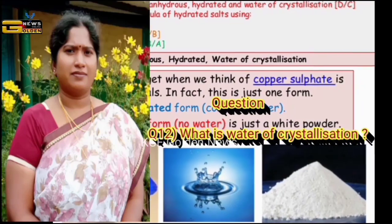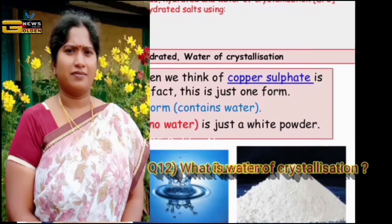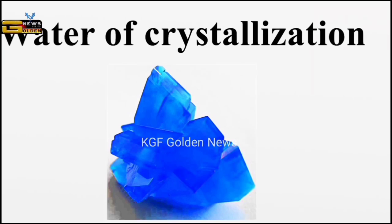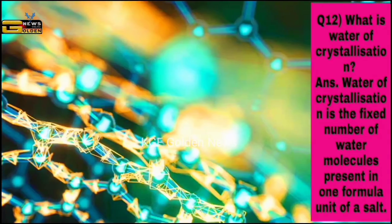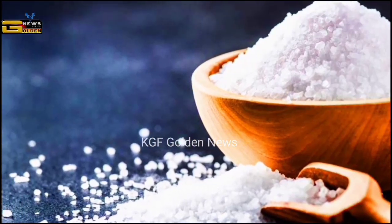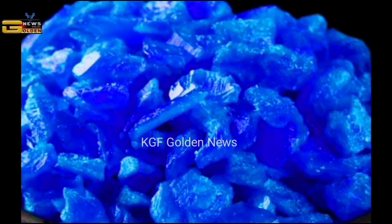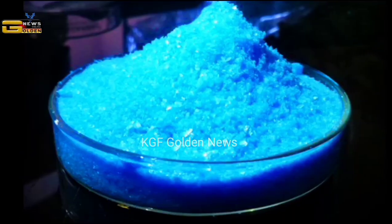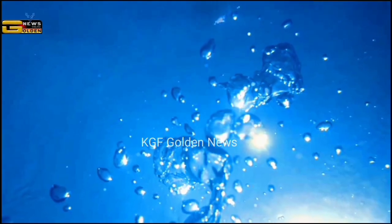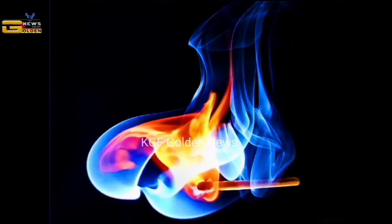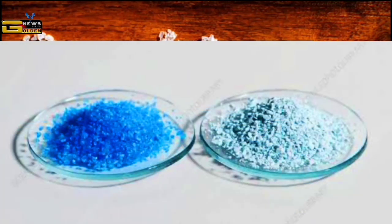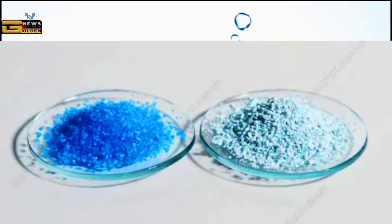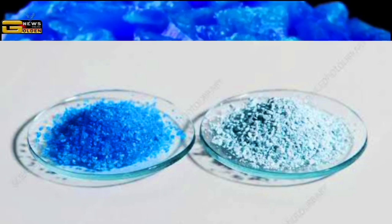Question number twelve: what is water of crystallization? The answer is, water of crystallization is a fixed number of water molecules present in one formula unit of a salt. For example, copper sulfate crystals, which seem to be dry, contain water of crystallization and are blue in color. When we heat the crystals, this water is removed and the salt turns white. If we moisten the crystals again with water, we find that the blue color of the crystal reappears.